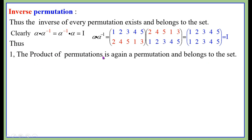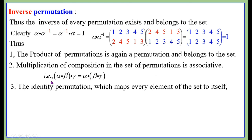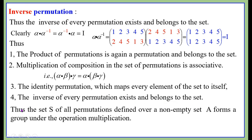Thus: the product of permutations is again a permutation and belongs to the set — the set of permutations is closed with respect to composition of functions. Multiplication by composition in the set of permutations is associative. The identity permutation maps every element of the set into itself. The inverse of every permutation exists and belongs to the set. Therefore, the set S of all permutations defined over a non-empty set A forms a group under the operation of multiplication.